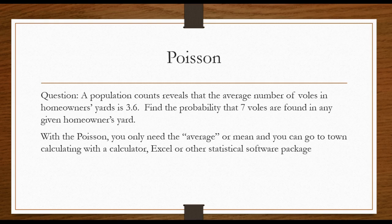With the Poisson, they only give you a mean. It says a population count reveals that the average number of voles in homeowners' yards is 3.6. A vole is a little bitty type of mole.